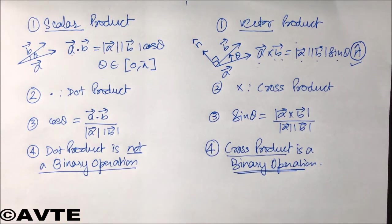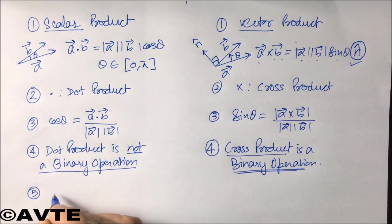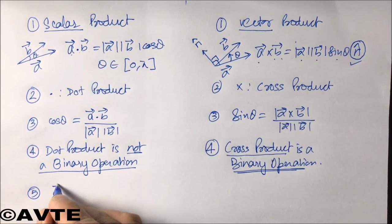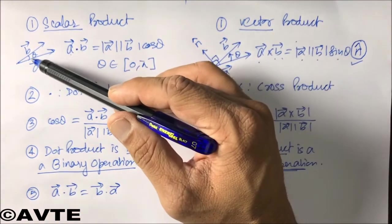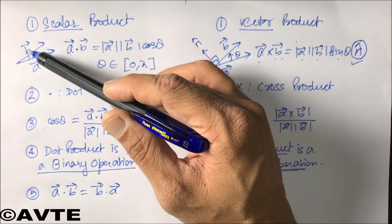Coming on to the next, dot product is commutative. That is, a dot b is equal to b dot a. That is, even if we change the direction from anticlockwise to clockwise, the answer remains the same.